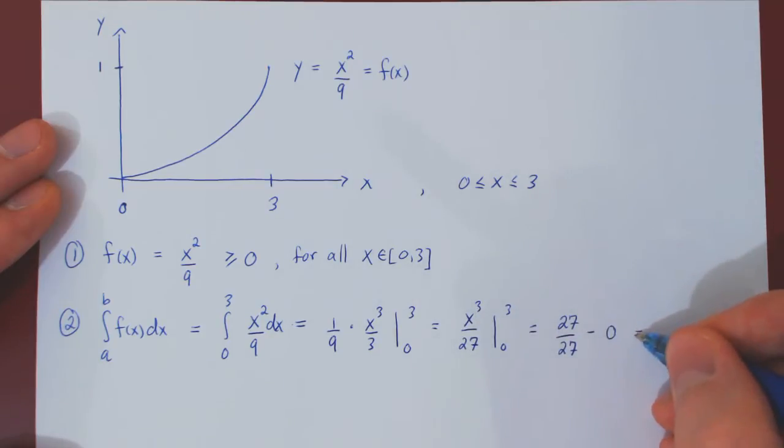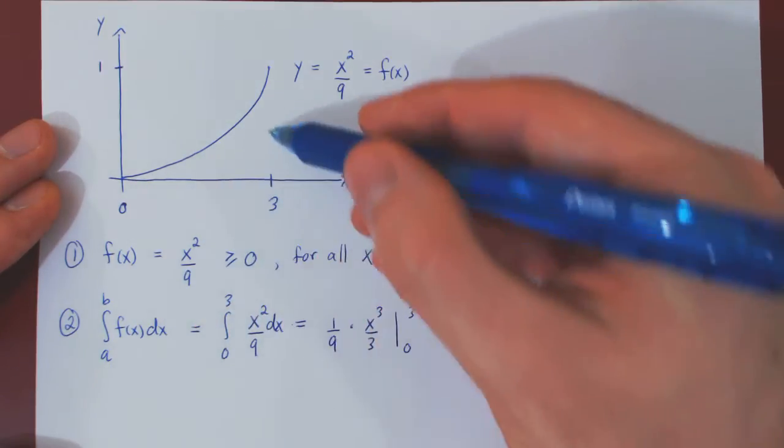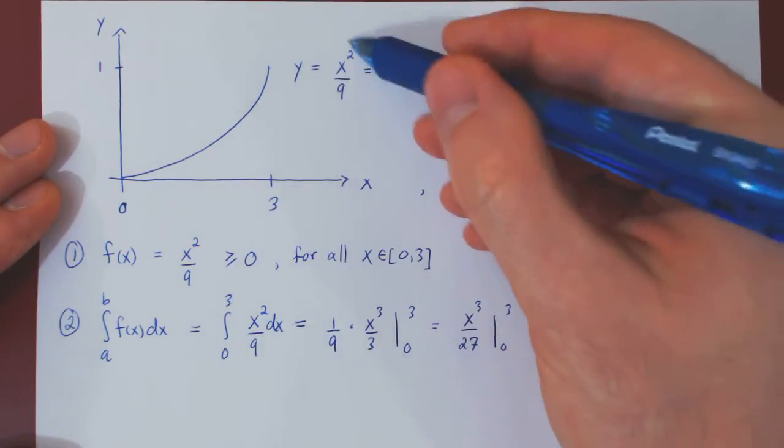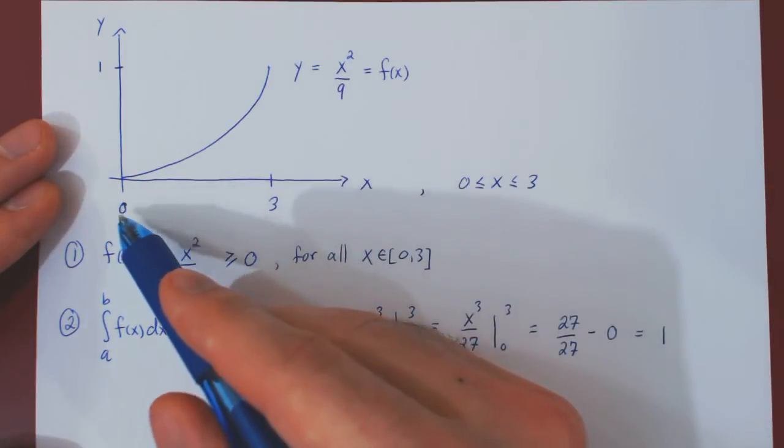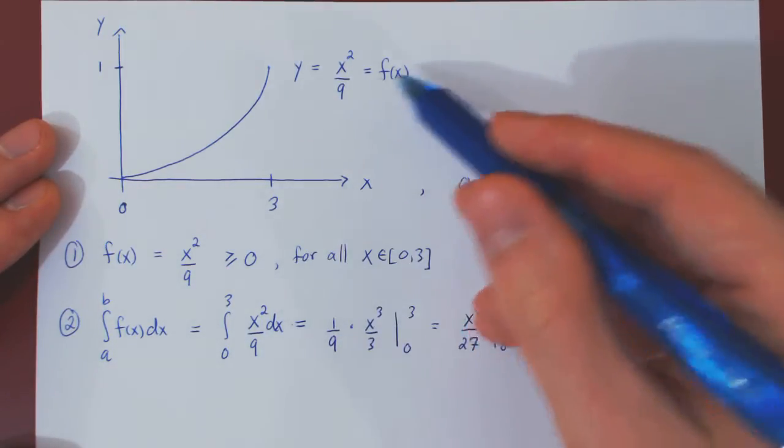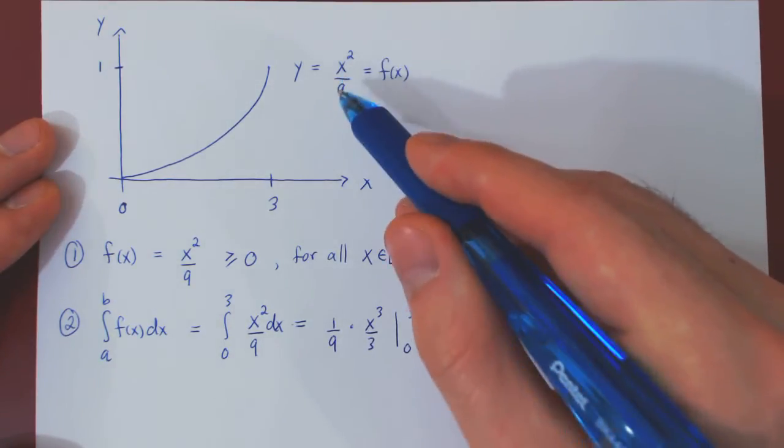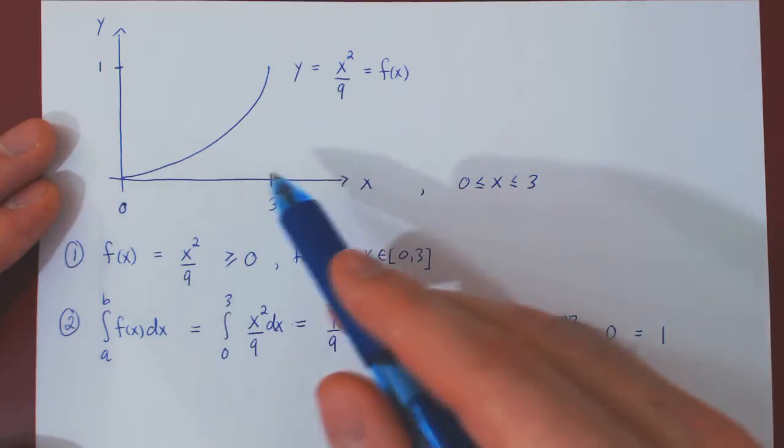And we are left in the end with 1. So, indeed, the entire area below our density function over 0 to 3 is equal to 1. So this proves that the function x squared over 9 is a probability density function on the interval from 0 to 3.